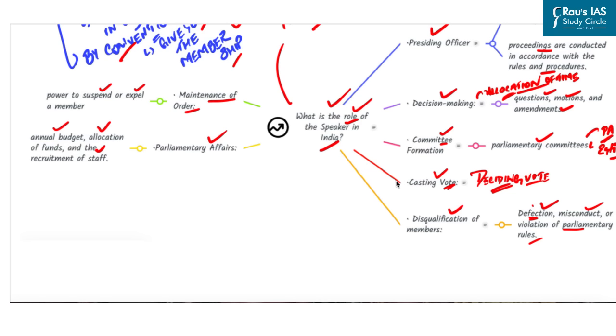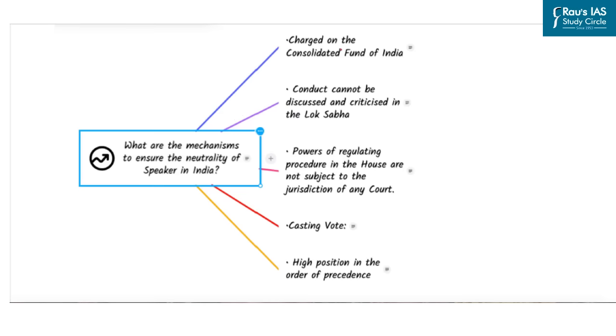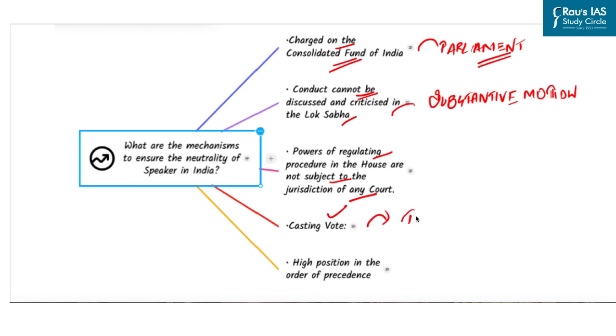Now let's see what are the mechanisms to ensure the neutrality of Speaker in India. First in this is that they are charged on the Consolidated Fund of India. What does it mean? That salaries and allowances of Speaker are fixed by Parliament. Next is, his work and conduct cannot be discussed and criticized in Lok Sabha or State Legislative Assembly except on a substantive motion. Next is, power of regulating procedure or conducting business or maintaining order in the House are not subject to the jurisdiction of any court. Another mechanism to ensure the neutrality of Speaker in India is casting vote. Because he only exercises a casting vote in the event of a tie. This makes the position of Speaker impartial. Also, he is given a very high position in the Order of Precedence. He is placed at the 7th rank along with the CAG of India.